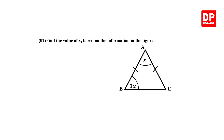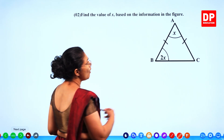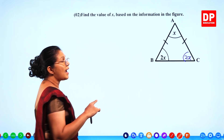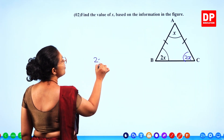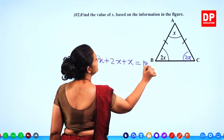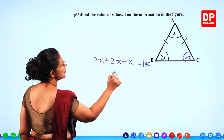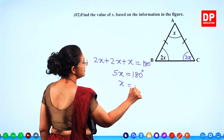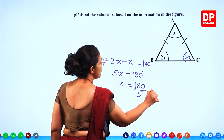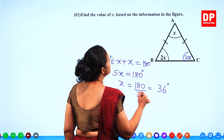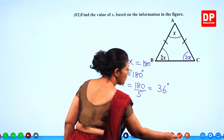Question number 2: find the value of x based on the information in the figure. Two sides are equal — if this is 2x, this is also 2x. Apply the sum of angles in a triangle: 2x plus 2x plus x equals 180, so 5x equals 180. Divide 180 by 5 to get x equals 36 degrees. That's also 2 marks.